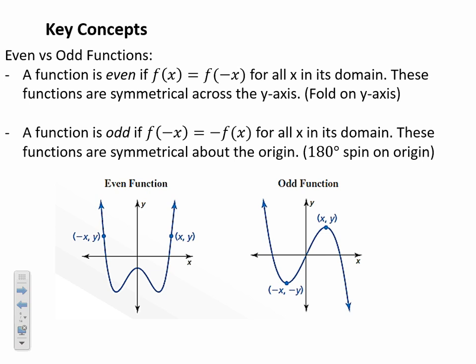An even function satisfies f(x) = f(−x) for all x in its domain, shown as symmetry across the y-axis. An odd function satisfies f(−x) = −f(x) for all x, and these are symmetric about the origin — like a 180-degree rotation. For every point on an odd function, the segment connecting it to its reflected point should pass through the origin.